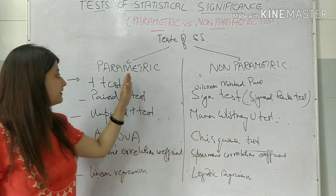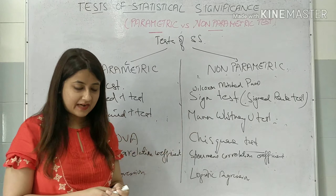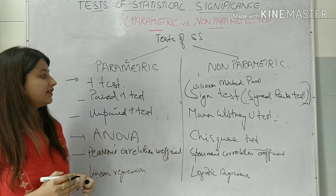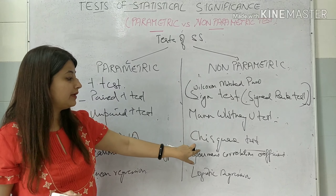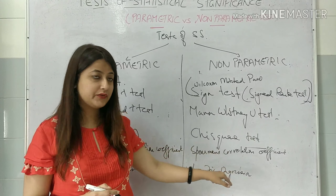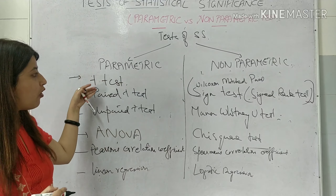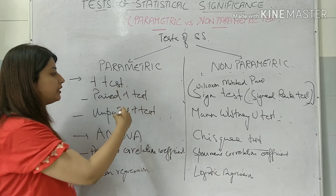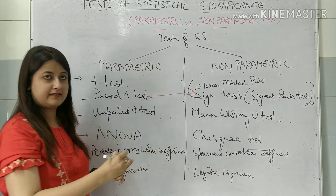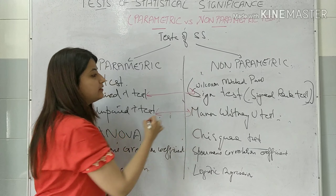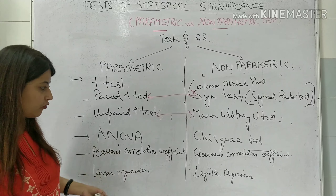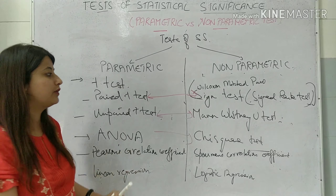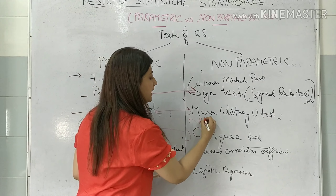The non-parametric tests you should know are: Wilcoxon signed-rank test, Mann-Whitney U test, chi-square test, Spearman's correlation coefficient, and logistic regression. All of these are counterparts of each other. The counterpart of paired T-test is the sign test. For unpaired T-test, it is Mann-Whitney U test. For ANOVA, we can have chi-square and also McNemar's chi-square test, which is also a counterpart of paired T-test.